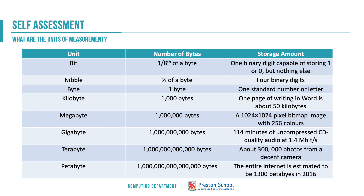A petabyte is enormous — the entire internet is estimated to be around 1,300 petabytes as of 2016. If you're ever asked to convert between those units, just remember the idea of multiplying by 1,000. To get from kilobytes to megabytes, times by 1,000; from megabytes to gigabytes, times by 1,000 again.